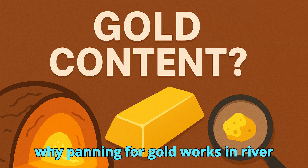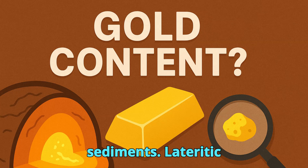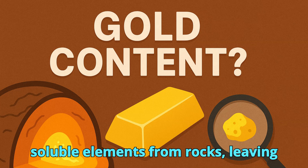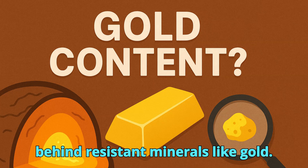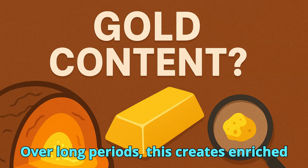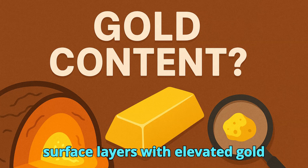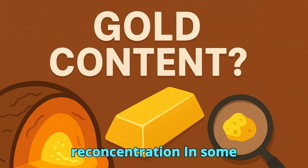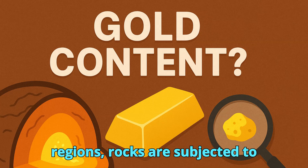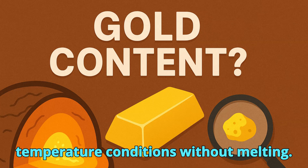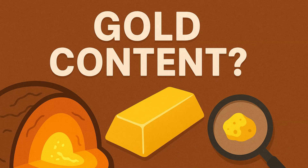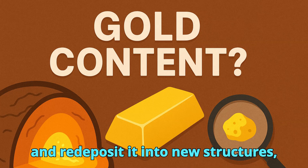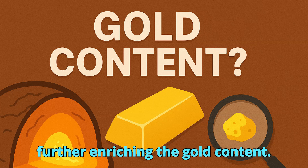This is why panning for gold works in river sediments. Lateritic concentration: in tropical climates, chemical weathering can strip away soluble elements from rocks, leaving behind resistant minerals like gold. Over long periods, this creates enriched surface layers with elevated gold content. In some regions, rocks are subjected to metamorphism — high pressure and temperature conditions without melting. During this process, fluids can remobilize gold from dispersed sources and redeposit it into new structures, further enriching the gold content.